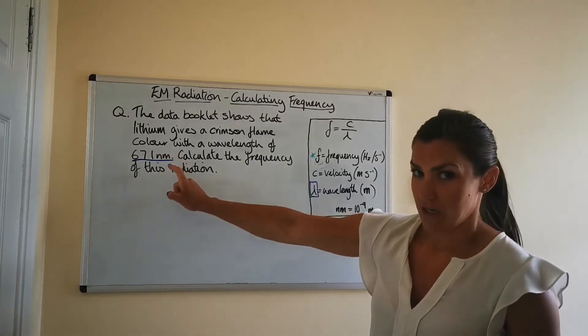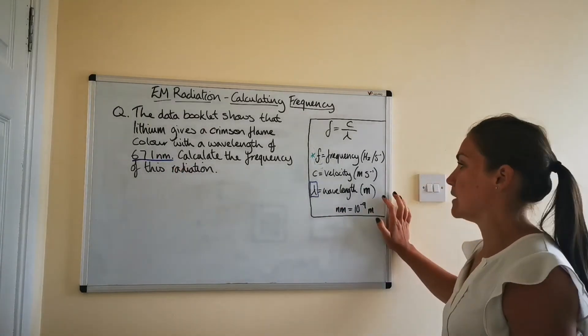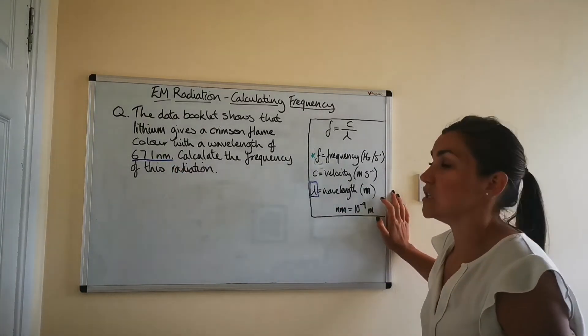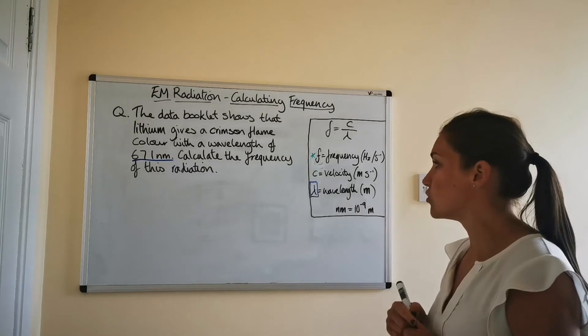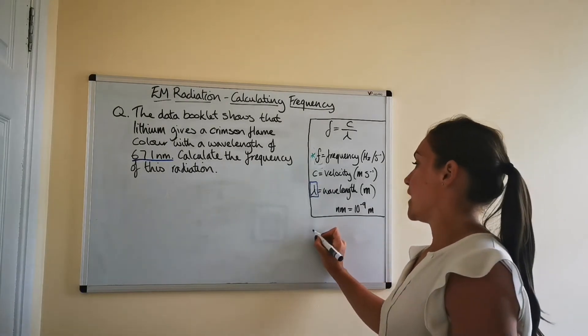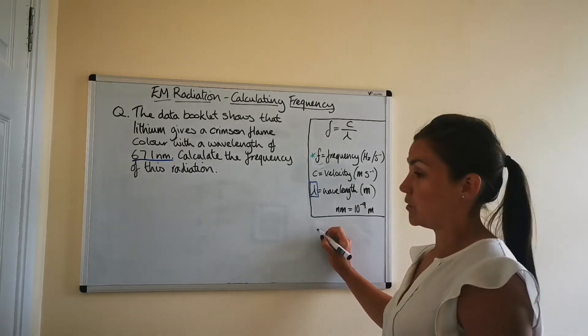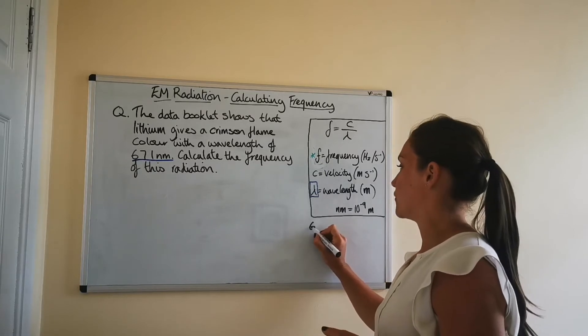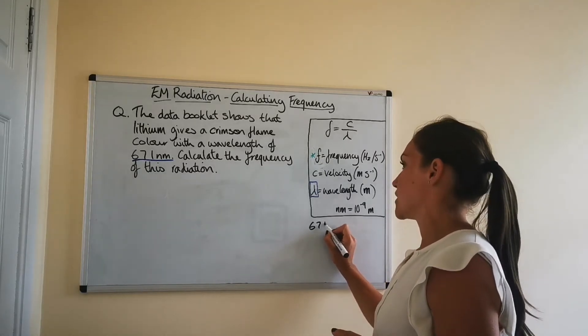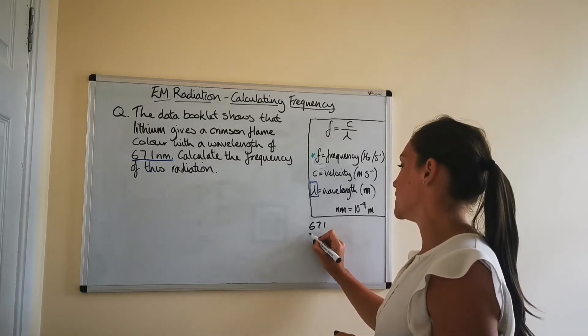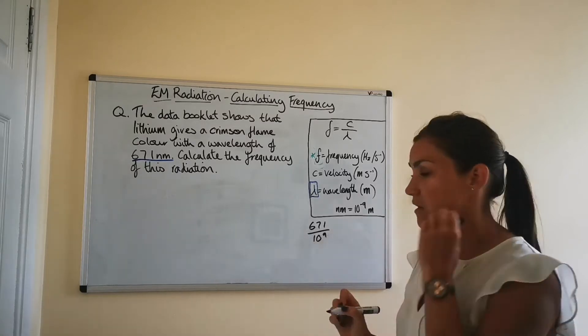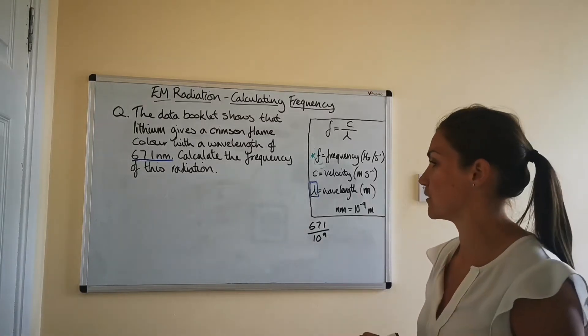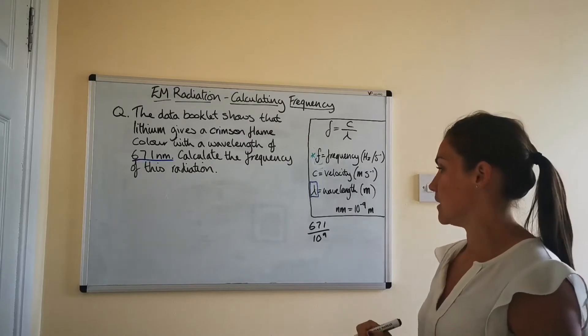Now, because the wavelength is given in nanometers here, and it needs to be in meters for the equation, we need to convert it. There are a couple of ways you can do it. First, you can convert it by doing 671 divided by 10 to the power of 9, because there's 10 to the power of 9 nanometers in a meter.